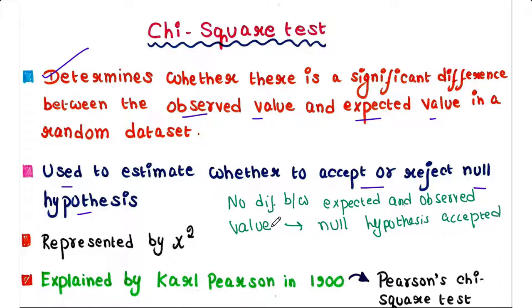And if there is a significant difference between expected and observed value, null hypothesis should be rejected because something is happening and alternative hypothesis should be accepted.